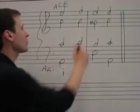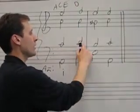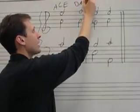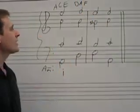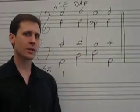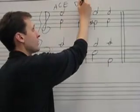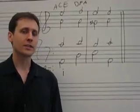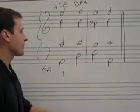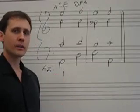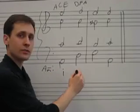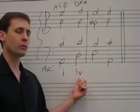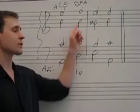Continuing on, the next chord: we've got D, then A, and F on top. D, A, F — you might not recognize that as a chord, but rearrange the letters to D, F, and A, and you'll see that is a D minor chord. In the key of A minor, D is the subdominant, so we're going to put a Roman numeral four there, and again it's lowercase because it's a D minor chord.